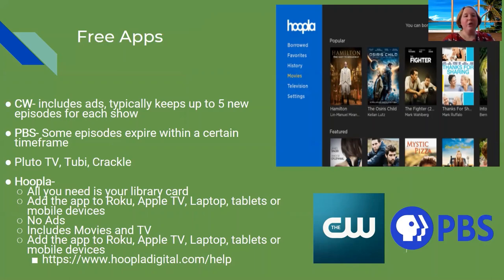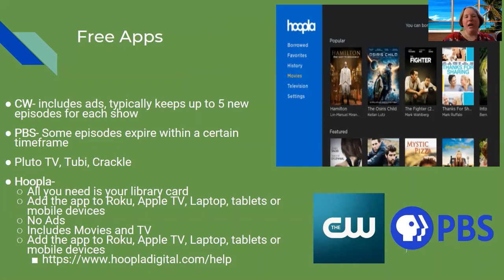Hoopla is available through your library — you just need a library card. You can add the app to your Roku or TV. There are no ads, and it includes movie and TV content. You get four downloads per month, so you can watch up to four things a month at no cost.